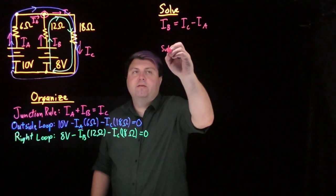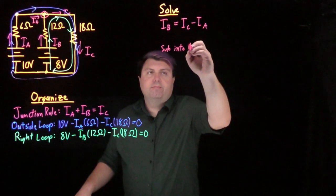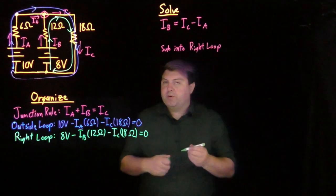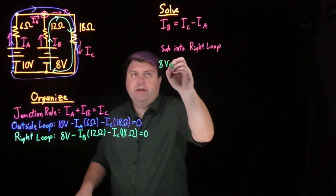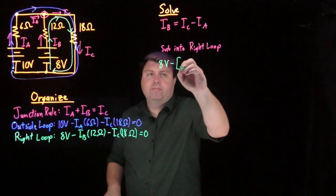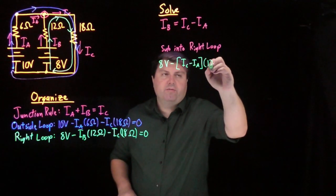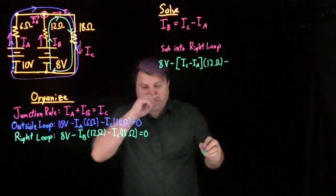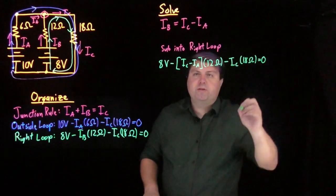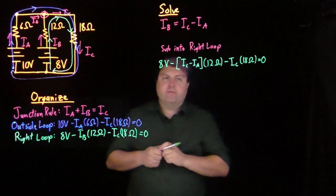And then I want to sub this into another equation. So I'm going to sub it into the right loop. In my right loop equation, now I've got 8 volts. Every time I see Ib, I'm going to replace it with Ic minus Ia times 12 ohms. And then I'm subtracting Ic times 18 ohms equals 0. This is probably one of the toughest things to do, one of the hardest things.